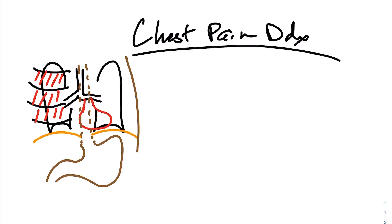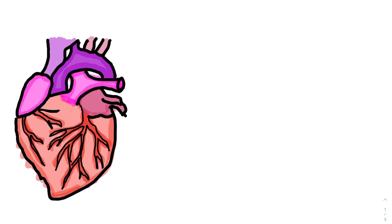If we take the anatomical approach, that gives us a system where we can think about the symptom logically. Something can be going on with the heart, the lung, the esophagus, the muscles — everything in that area, including the skin. That'll organize our differential so we can focus on subtleties of the patient's presentation to choose the right diagnosis and rank things that are more likely versus not as likely. The first thing people think about when they think of chest pain is a heart attack, so we'll focus on the heart first.